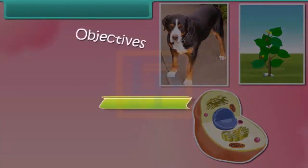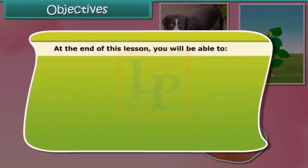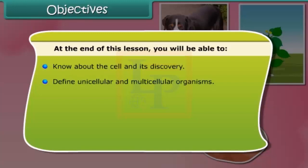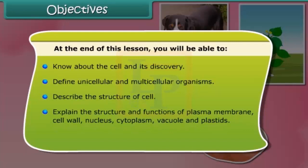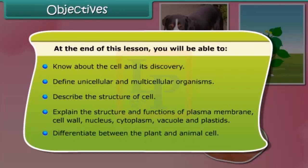Objectives. At the end of this lesson you'll be able to: know about the cell and its discovery; define unicellular and multicellular organisms; describe the structure of a cell; explain the structure and functions of cell membrane, cell wall, cytoplasm, nucleus, vacuole and plastids; and differentiate between the plant and animal cell.